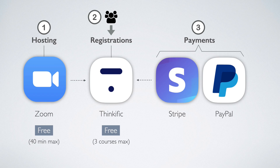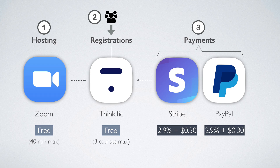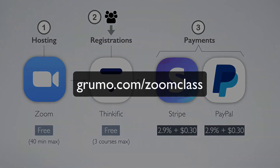Stripe and PayPal offer free accounts, but both charge 2.9% plus 30 cents per transaction. Let's put everything together. You can download a checklist to replicate all the steps in this tutorial at grumo.com/zoom-class.